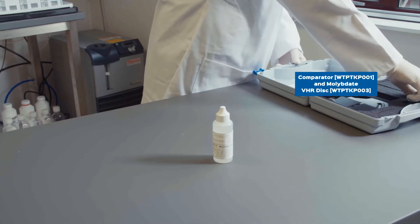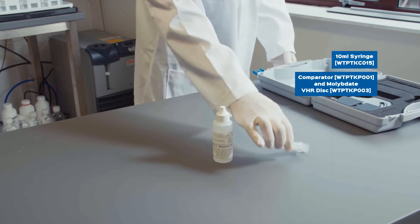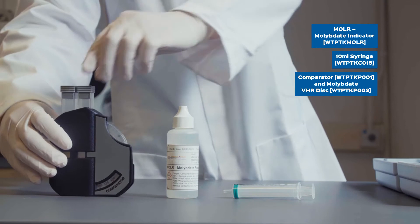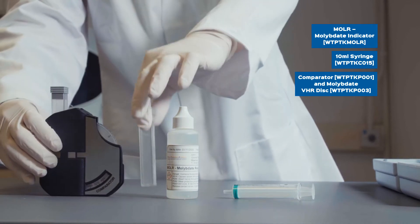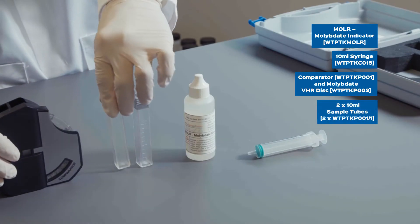The kit includes a 65ml bottle of MolR Molybdate indicator, a 10ml syringe, a comparator containing a Molybdate Very High Range disc, and two 10ml sample tubes.